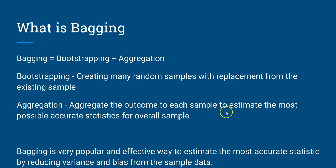Now the second part is aggregation. Aggregation is applying a function to the outcome of each sample to estimate the most accurate statistic for the overall sample. In the next slide I'll show it in more detail for both classification and regression problems. Overall, bagging creates random samples with replacement and then aggregates those samples to estimate the best statistic for your training data.